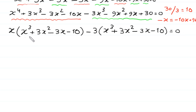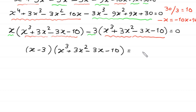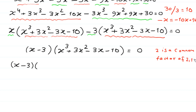You can see that x cubed plus 3x squared minus 3x minus 10 is a common factor. So we factor it out, leaving (x minus 3) times (x cubed plus 3x squared minus 3x minus 10) equal to 0. Next, because 2 is a common factor of 2 and 10, we split this 3x squared as 2x squared plus 1x squared.